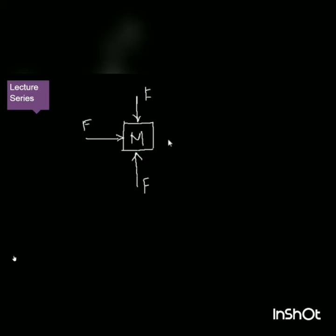One force is from the left, another is from the right, one is from the top, and another is from the bottom. That means there are four forces acting on the body: two forces acting on the X-axis having the same magnitude F and opposite to each other, and two forces acting on the Y-axis of the same magnitude and opposite to each other.